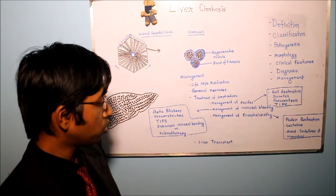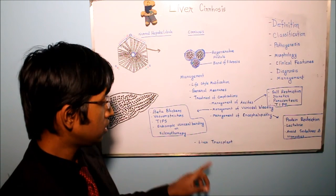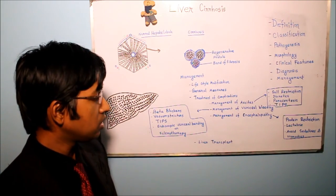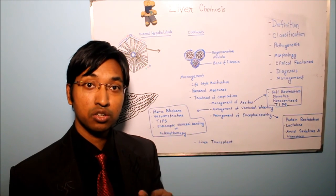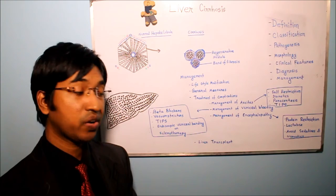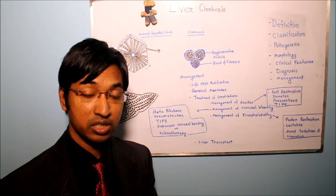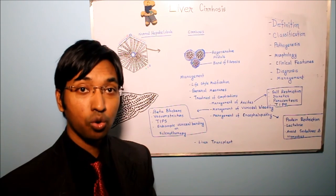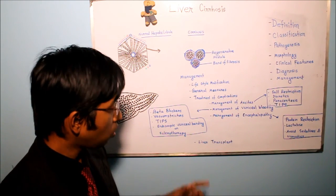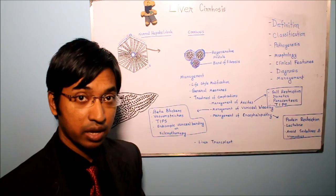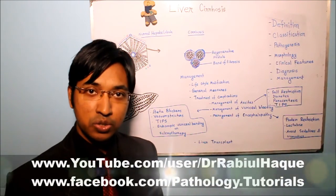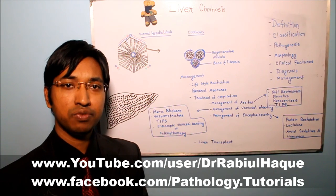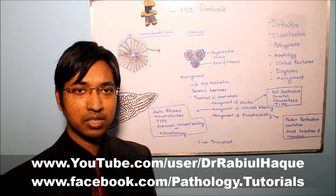The last point regarding management of liver cirrhosis is liver transplant. In some cases the patient of liver cirrhosis will not respond to medical therapy, and in those unresponsive yet life-threatening cases, liver transplant is the only option. This concludes today's video on liver cirrhosis part 2. I hope this video was helpful. If you like my videos, do comment, share, and subscribe.